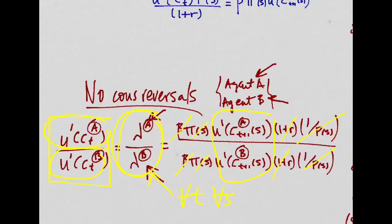Assuming complete markets, the ratio between the marginal utilities of two different consumers has to stay constant over time. And that means that we cannot see consumption reversals in these kind of models.